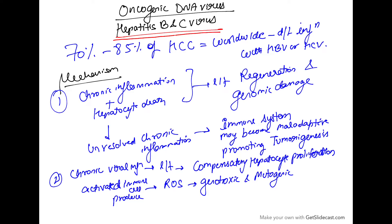Hello everyone, today we are going to discuss oncogenic DNA viruses — Hepatitis B and C — and how they are implicated in carcinogenesis. 70 to 85 percent of hepatocellular carcinoma worldwide is caused by infection with Hepatitis B virus or Hepatitis C virus.